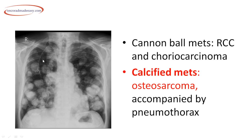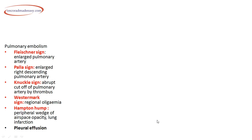Instead of fine miliary nodules, these are multiple large variable-size nodular lesions scattered throughout the lung parenchyma on both sides — typical of cannonball metastasis, seen in renal cell carcinoma and choriocarcinoma. Calcified metastases are seen in osteosarcoma, which is also accompanied by a pneumothorax.